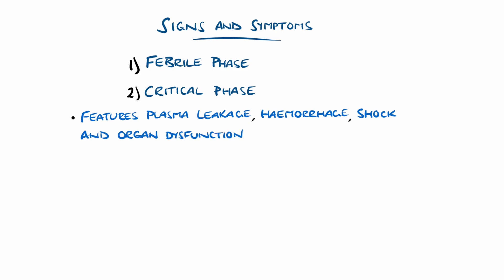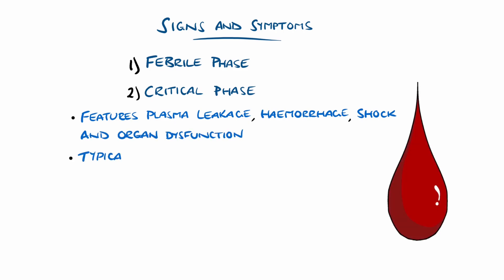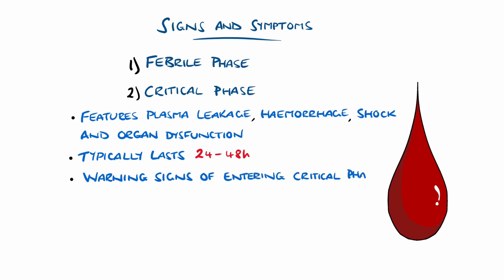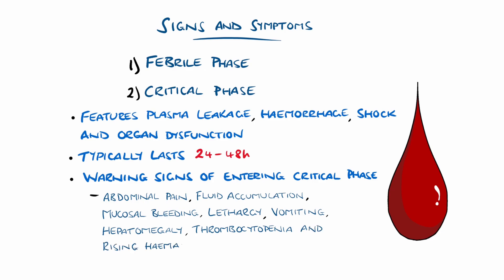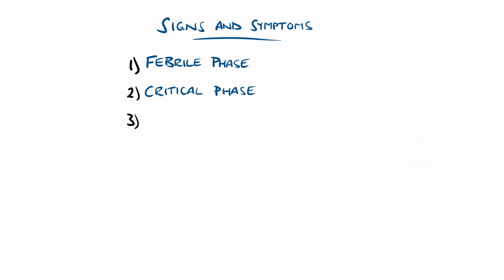This phase lasts typically 24–48 hours, with most people improving. Not all patients will pass to the critical phase, but warning signs that the patient is entering it include abdominal pain, fluid accumulation like ascites or edema, mucosal bleeding like epistaxis or gingival bleeding, lethargy, vomiting, hepatomegaly, and lab investigations showing thrombocytopenia and a raised hematocrit.